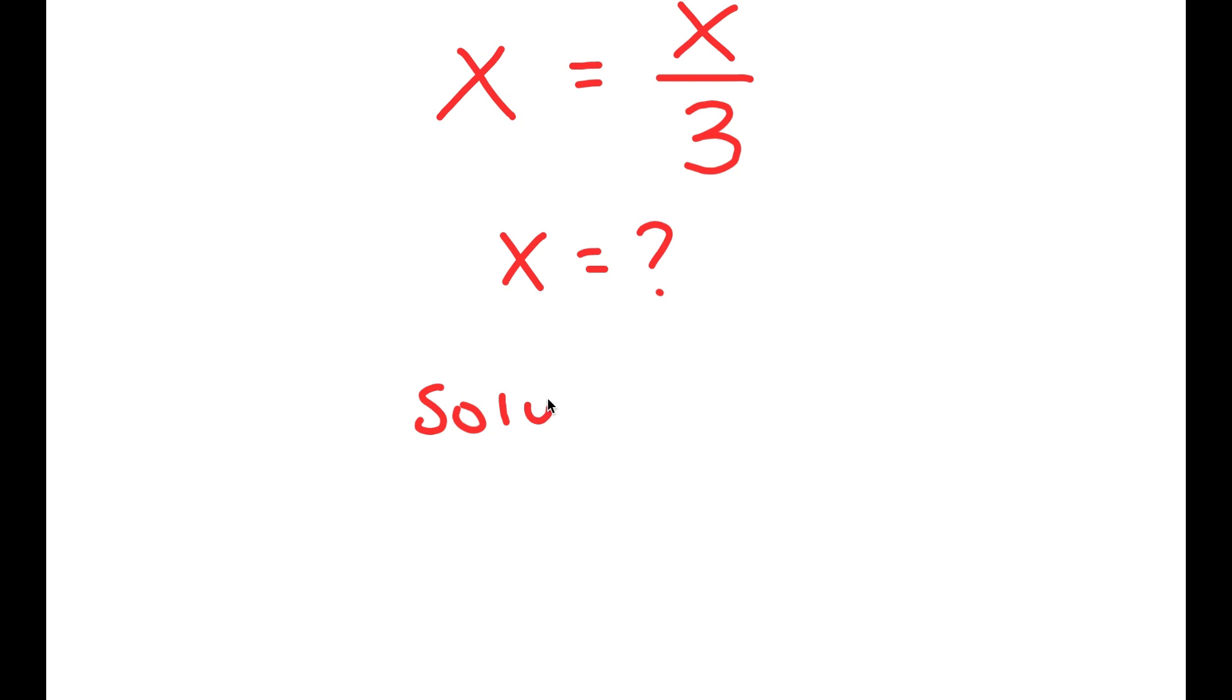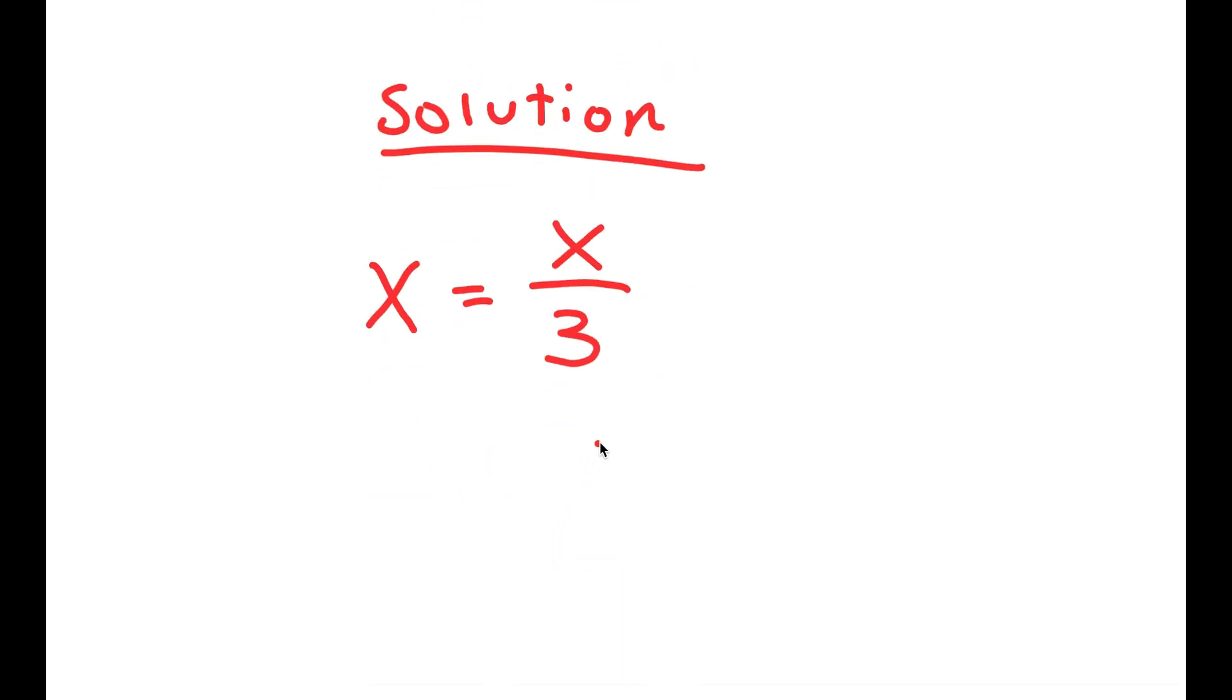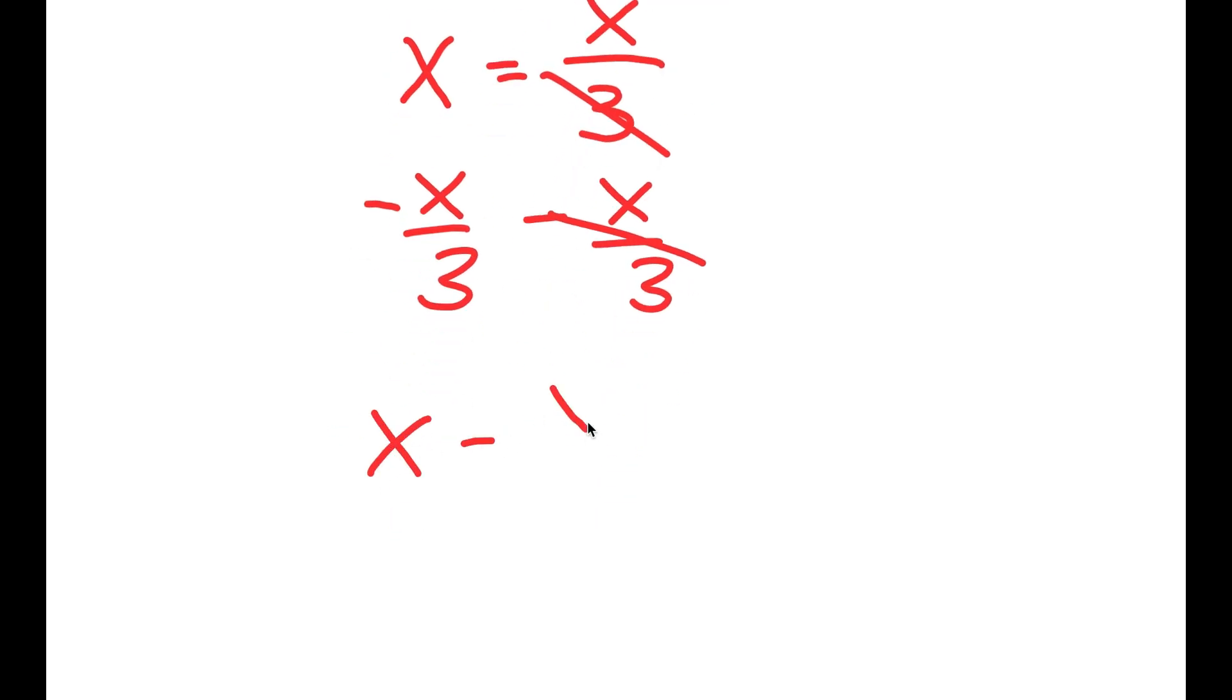For my solution, I'm going to first rewrite this problem over here. So I get x is equal to x over 3. And what I'm going to do is subtract x over 3 on both sides. So I get x minus x over 3 is equal to 0.